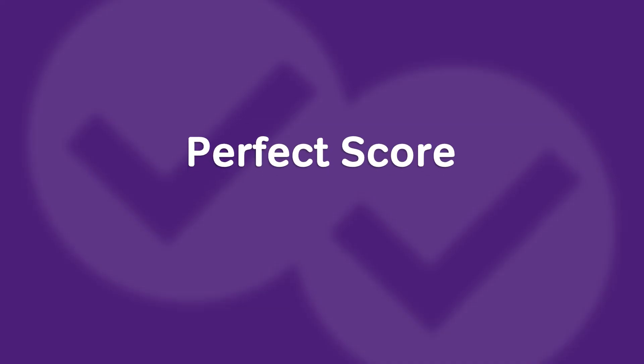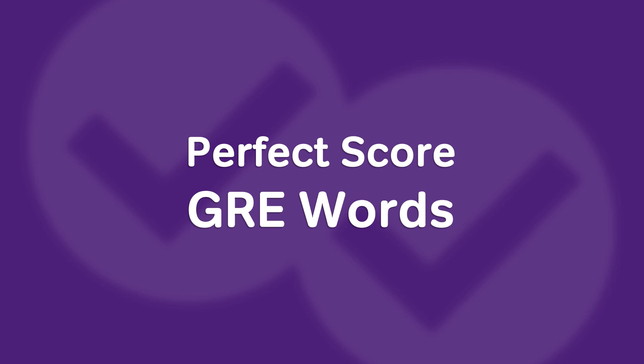Hello, this is Chris of Magoosh, and on this Vocab Wednesday we have perfect score words. On the GRE, on the second verbal section, there's basically a hard section and an easy section, and which one you get depends on your performance on the very first verbal section. So if you get that hard second verbal section, these are the kind of words you're going to see on there.